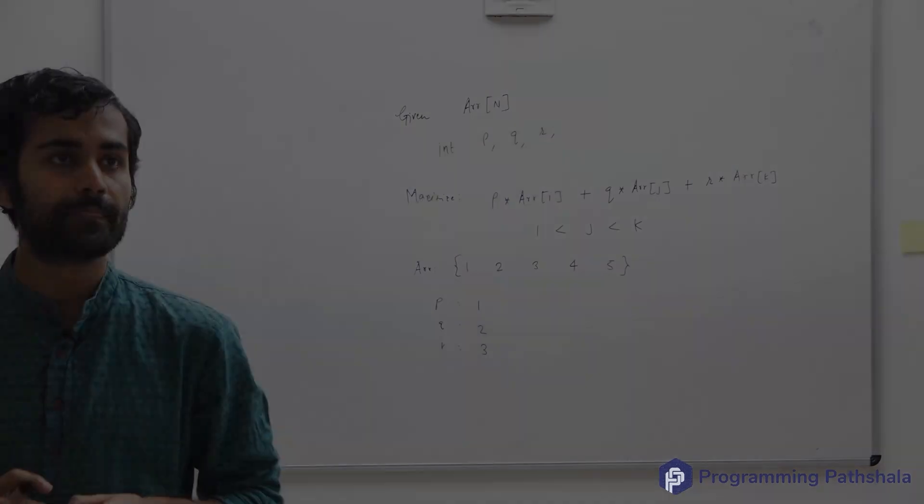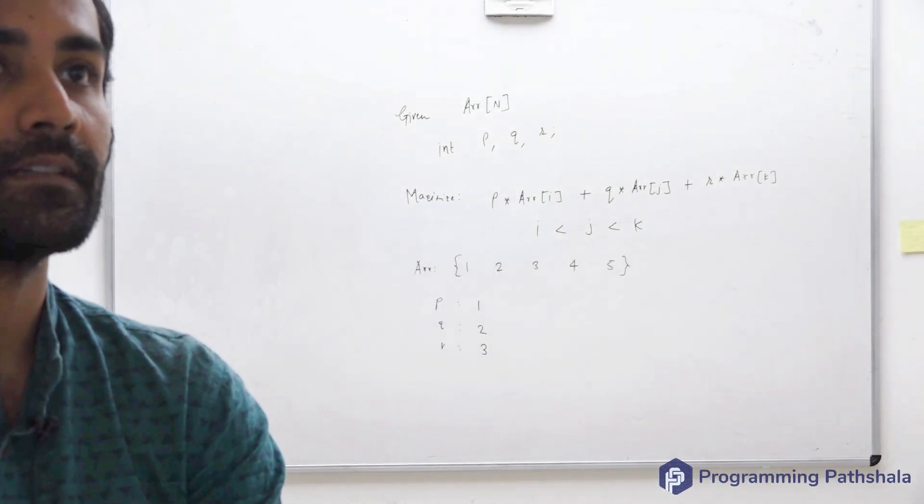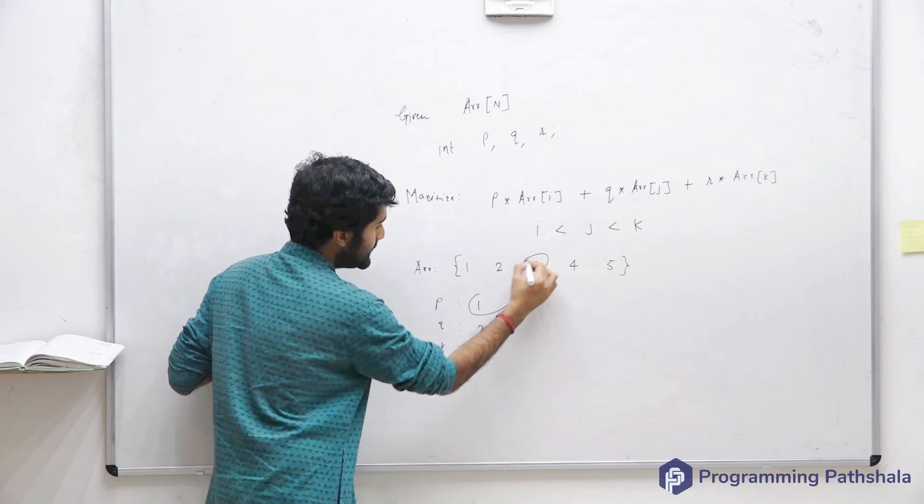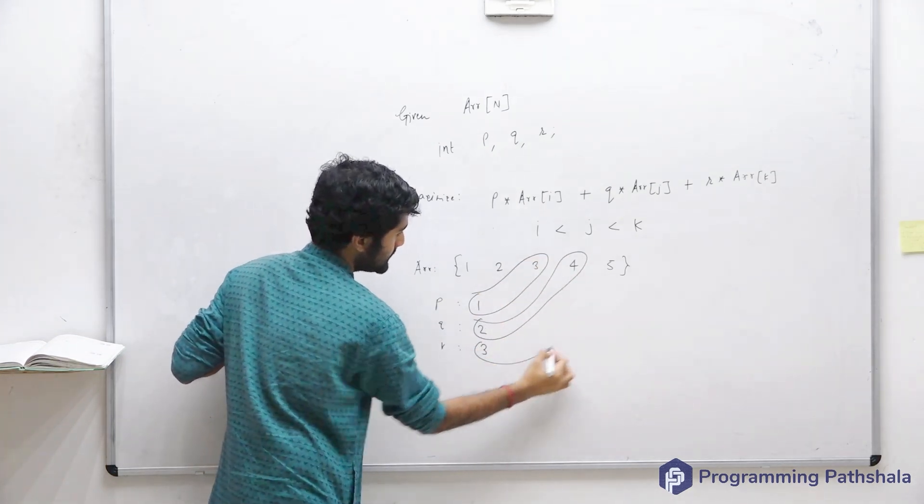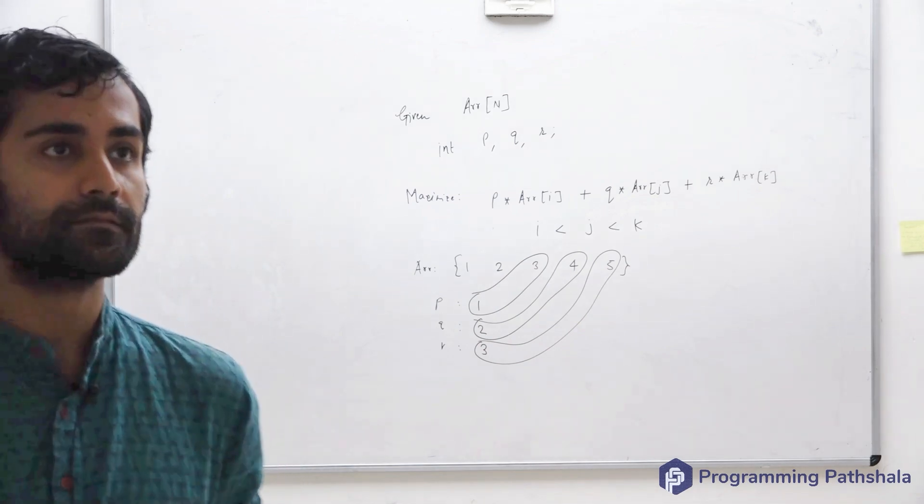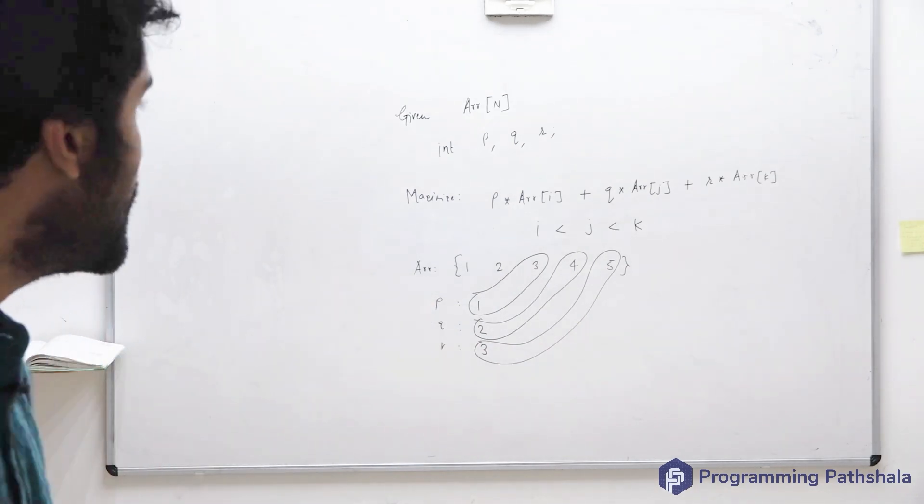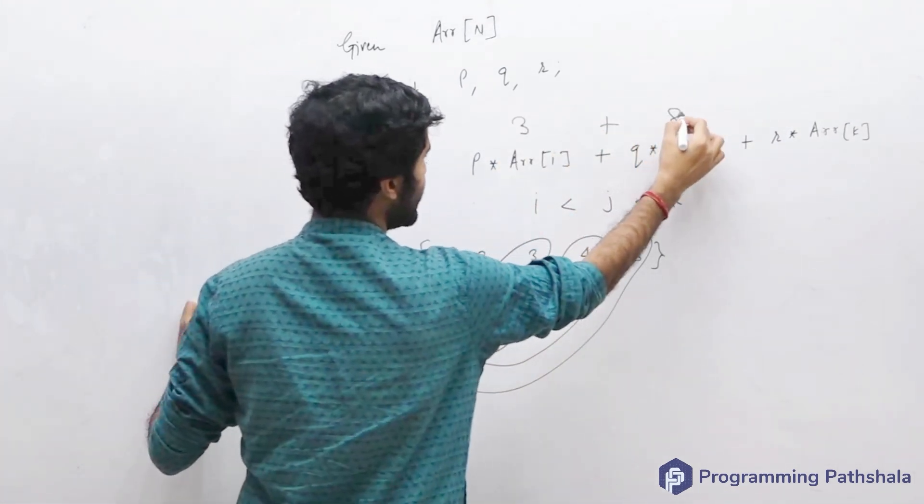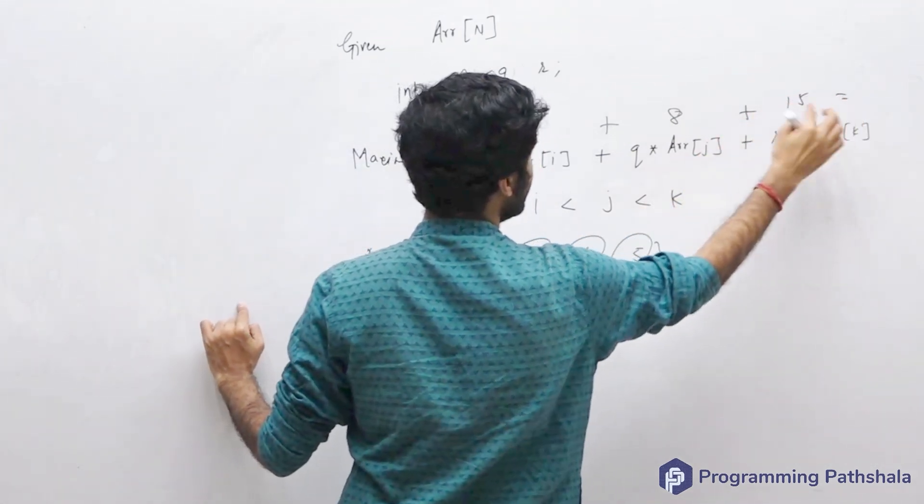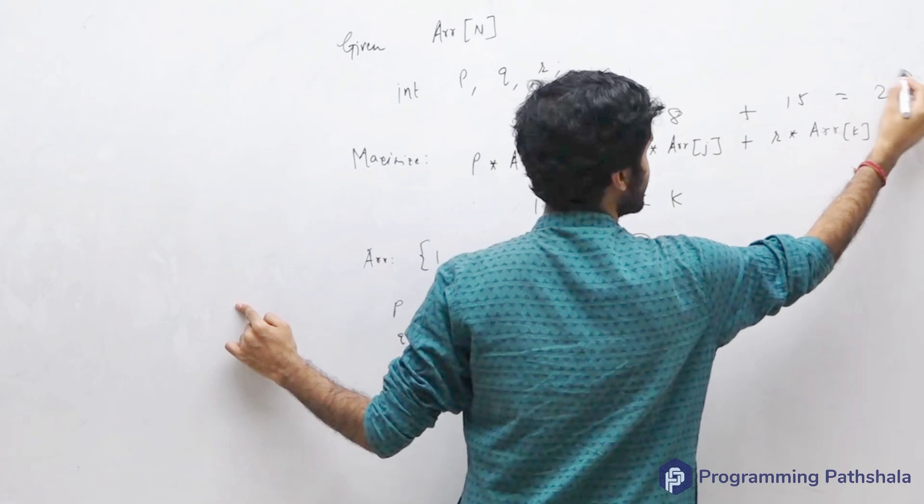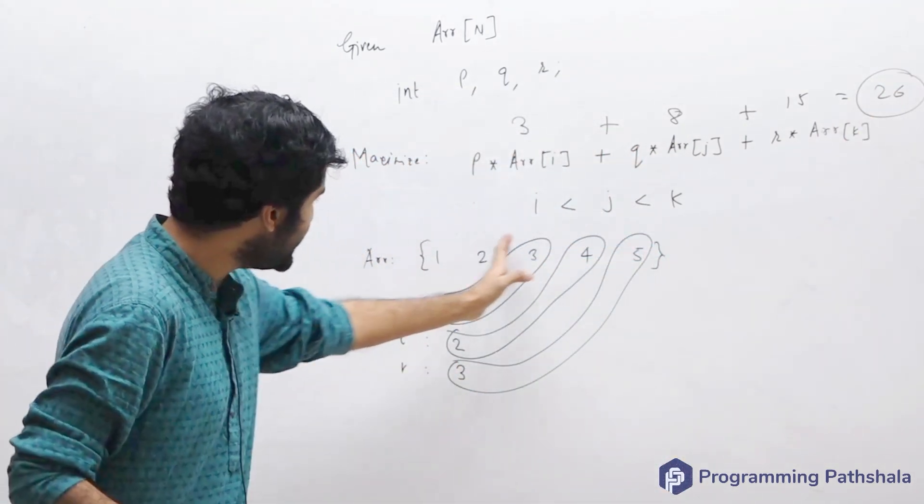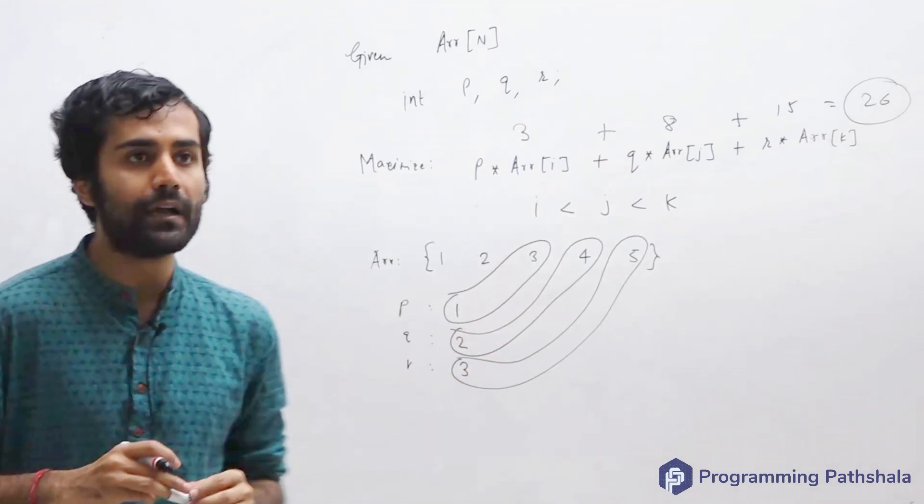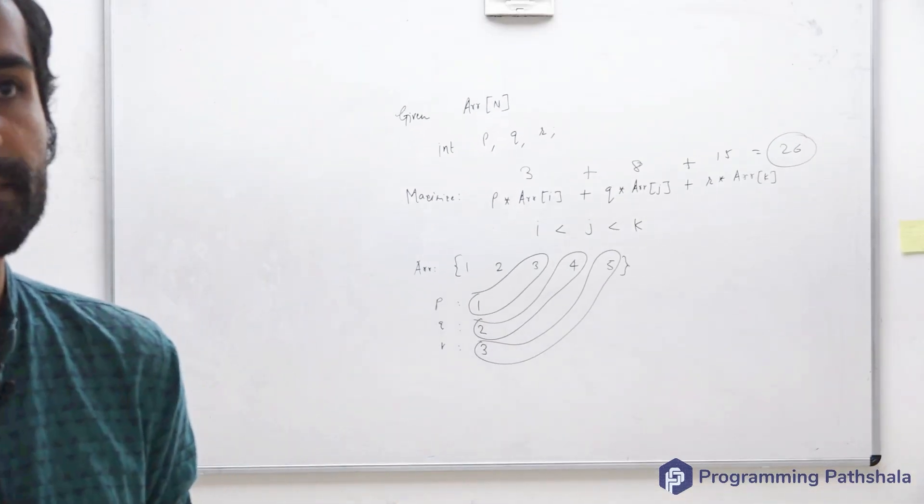So 26 you are getting. Which elements have you chosen? You've chosen 3, 4, and 5. This is what I believe you would have done because if you multiply 1 with 3 you get 3, if you multiply 2 with 4 you get 8, and if you multiply 3 with 5 you get 15. This will be 15 plus 8 is 23, plus 3 is 26. If you try to choose any other combination, any other triplet ai, aj, ak, you will end up getting a value smaller than 26 only.